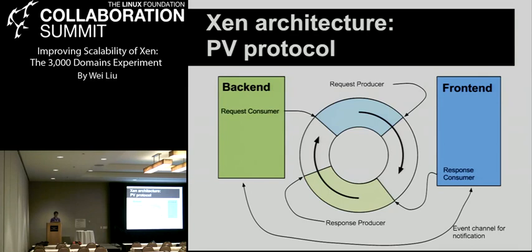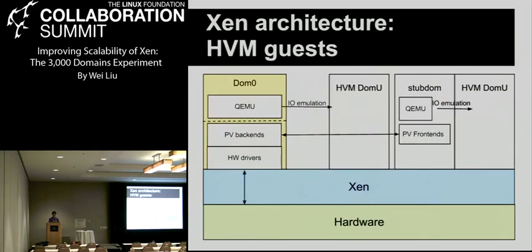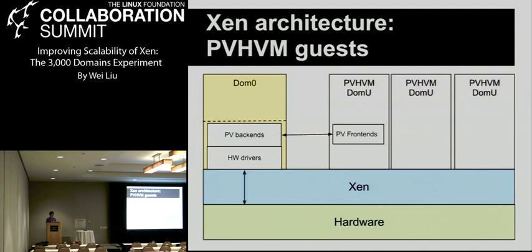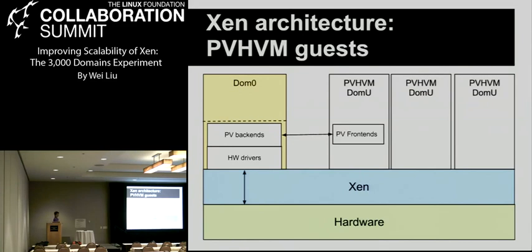Things mapped into event channels include the physical IRQ — the interrupt line from real hardware — the virtual IRQ for virtual devices, IPI (inter-processor interrupt), and the inter-domain notification event channel. The scalability of Xen is somewhat limited by the number of event channels supported by the whole system.